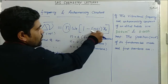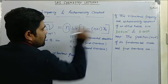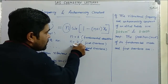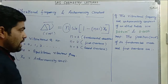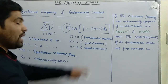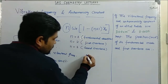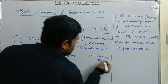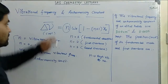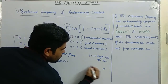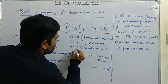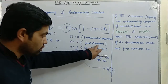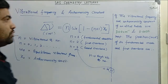In this formula, the value of n is 1, 2, 3, and so on. When you put n equals 1, you get the fundamental absorption — the fundamental frequency. When you put n equals 2, you get the first overtone. When you put n equals 3, you get the second overtone. All these transitions start from 0 to n, so fundamental is 0 to 1, first overtone is 0 to 2, and so on.